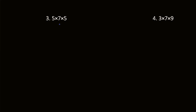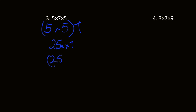Next we have 5 times 7 times 5. I'm going to group 5 times 5 because it's the same number and easy to multiply. 5 times 5 is equal to 25, and then we also have 7. The parentheses just show that you're multiplying. 25 times 7 — let's work it out: 5 times 7 is 35, carry the 3, and 2 times 7 is 14. 14 plus 3 is 17, so we get 175.